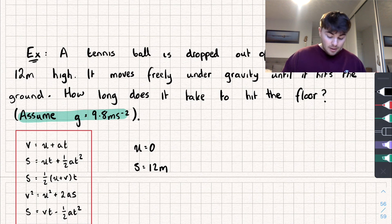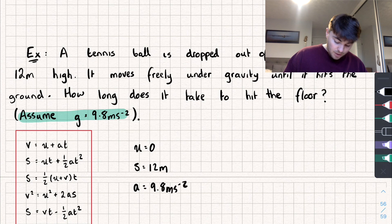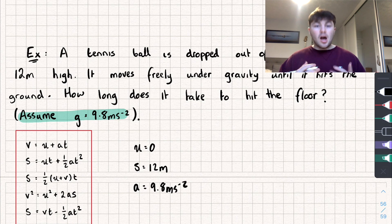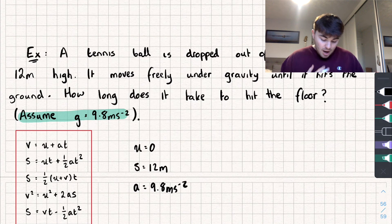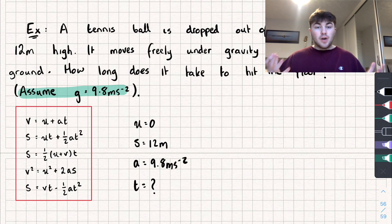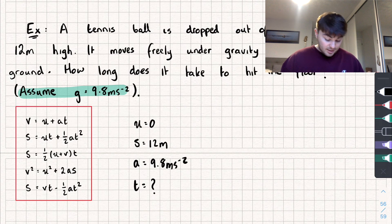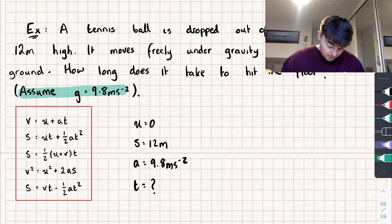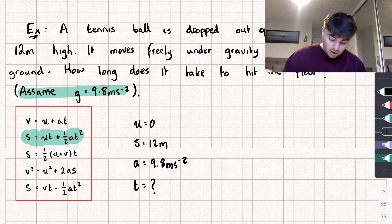The question says to assume gravity is 9.8 m/s², so a = 9.8 m/s². Always use 9.8 unless the question gives you a different value. We need to find the time t, and we don't care about the final velocity, so we look for a SUVAT equation with u, s, a, and t — one without v. We use s = ut + ½at².